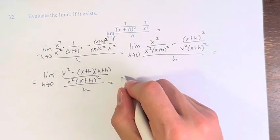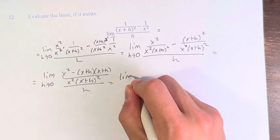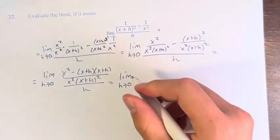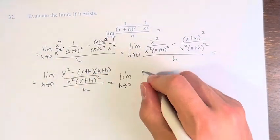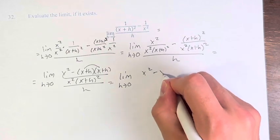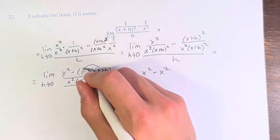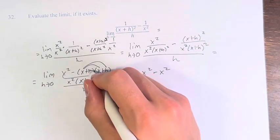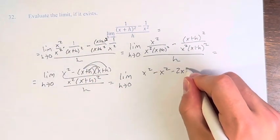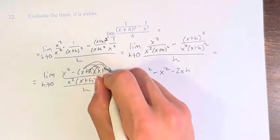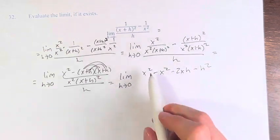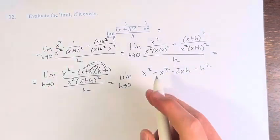This is equal to the limit as h approaches 0 of x squared minus (x squared plus 2xh plus h squared), which expands the numerator to x squared minus x squared minus 2xh minus h squared. Remember to distribute the negative to all of these terms.